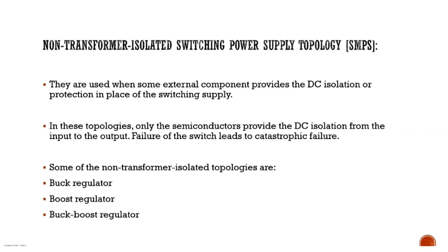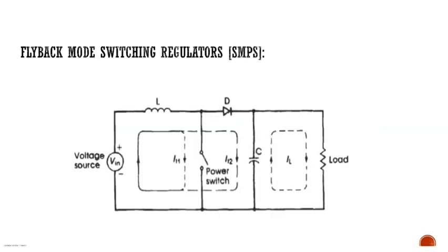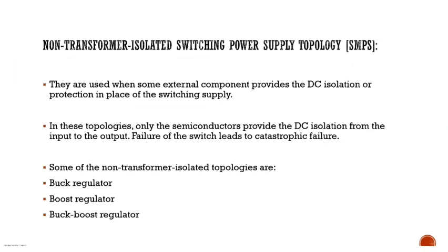There are two further classifications: non-transformer isolated SMPS and transformer isolated SMPS. In non-transformer isolated SMPS, no transformer is used; isolation from input to output is provided only by semiconductors or external components. Examples include buck regulator, boost regulator, and buck-boost regulator — circuits in which no transformer is present in the circuit diagram.